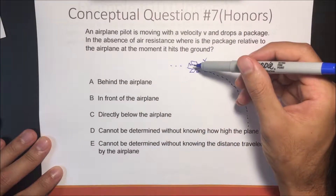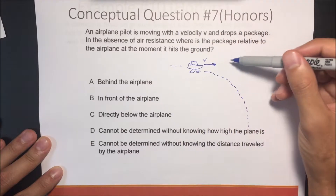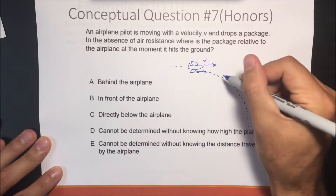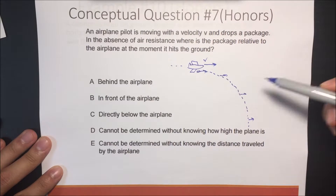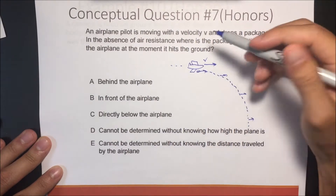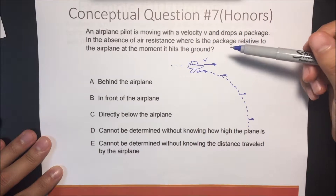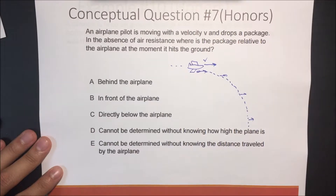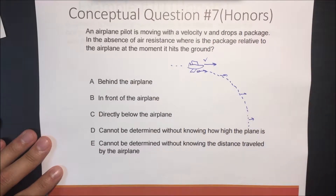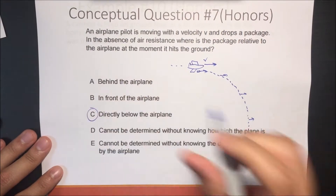Since the airplane is also moving, the velocity in the x-direction of the package and the velocity in the x-direction of the airplane will be exactly the same. So when someone from the airplane looks directly down, the package is going to be directly below the airplane. You can even try this: if you're running and you drop a tennis ball, it looks like it's falling directly below you. From the outside perspective, it looks like a half parabola, but from the plane it's directly below.